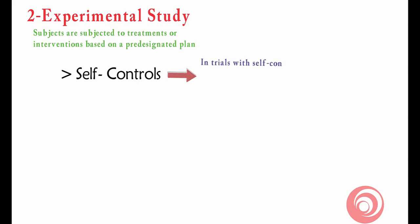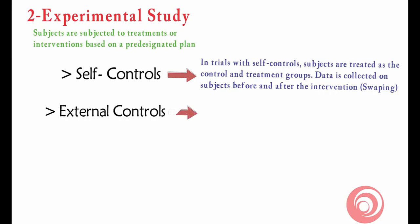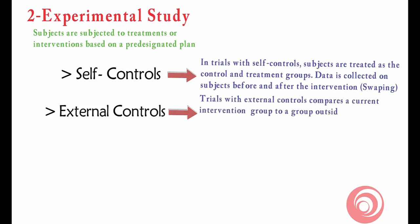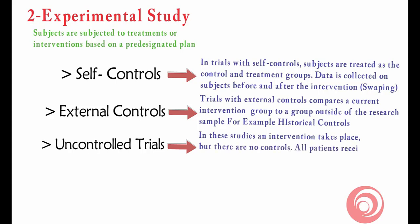The second type of study is experimental study. In this case, subjects are subjected to treatments or interventions based on a predesignated plan. In experimental studies we have self-control studies, where we have two groups: a treatment group and a control group, collected before and after the intervention — also called swapping. Then we have external control, where participants receive the intervention and results are compared with an external source, also called pre-published studies. Then we have uncontrolled trials, where both participants receive the intervention but there is no control group.